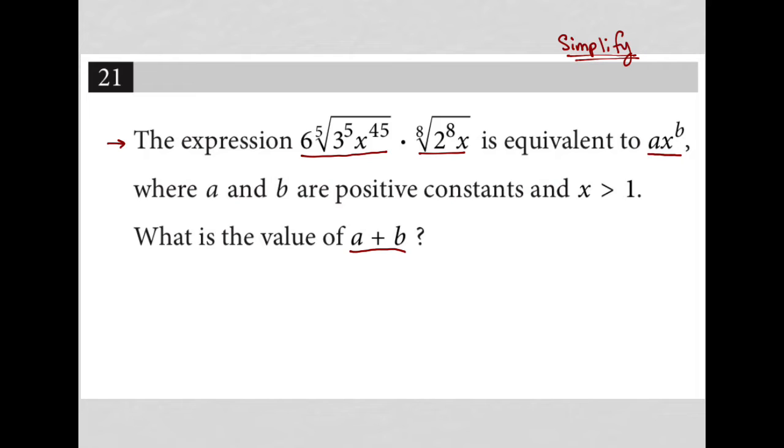There's quite a bit to simplify here, so let's get started. Whenever I have compound things under a radical, like what we have here, 3 to the 5th and x to the 45th, I like to write them as separate so we can clearly see how they're being simplified.